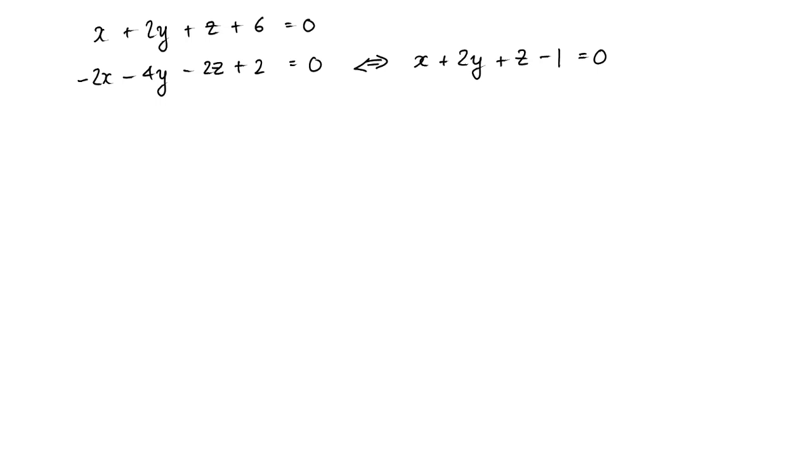Alright, so we have a, b, c equal to 1, 2, 1. We've got d1 equals 6. That's just come from here. And we've got d2 equals negative 1. That's come from here.